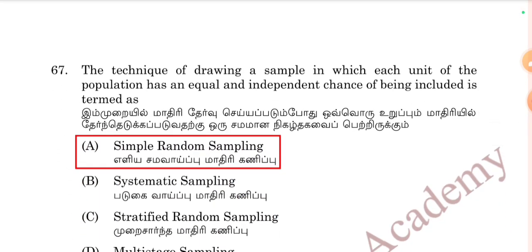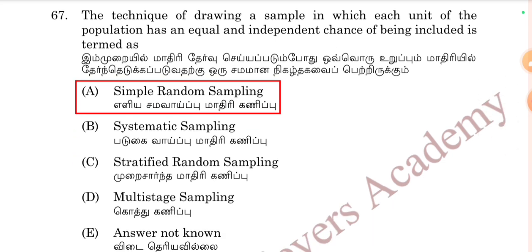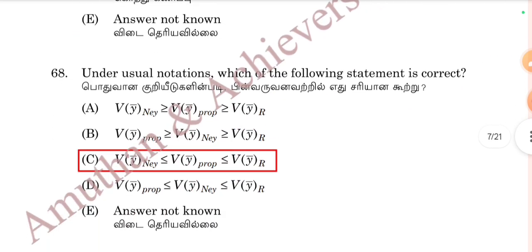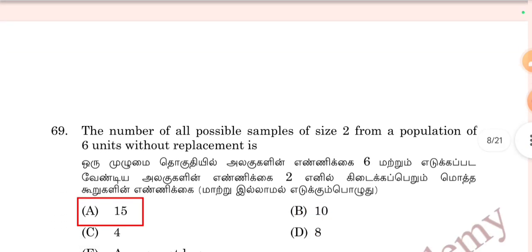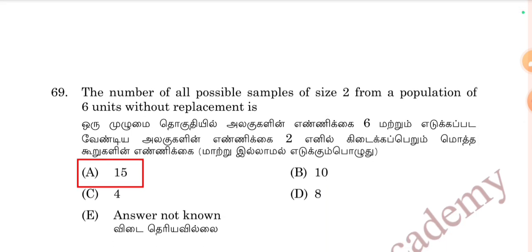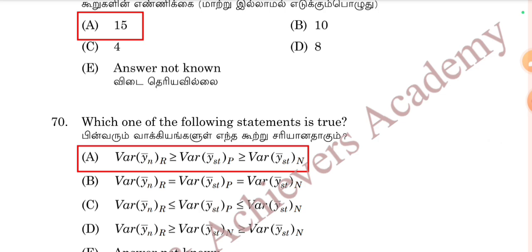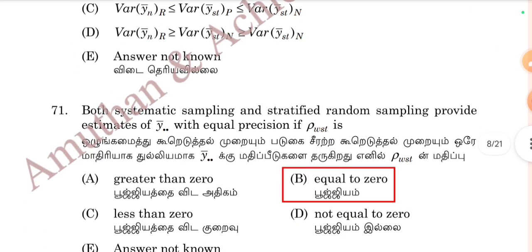The technique of drawing a sample where each unit of the population has an equal and independent chance of being selected is called simple random sampling — Option D is correct. The number of all possible samples of size two from a population of six units without replacement is 15 — Option A is correct.